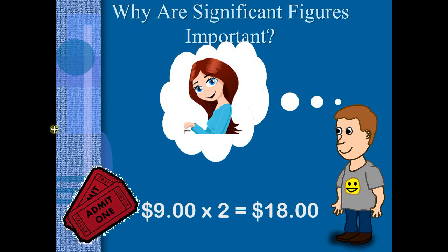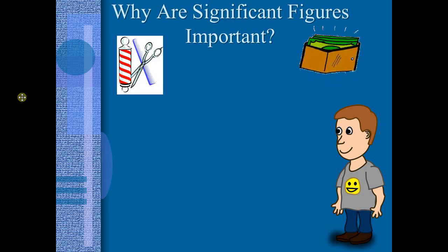and found that the tickets were going to be $9 each. So he knew he was going to need $18 to take Sarah to the movies. So he looked in his wallet, did a quick glance in there, saw there's a 20, there's a 10, there's a 5 or 2, and there's a whole bunch of 1s in there. So, yes, I'm in business. I've got about $50 in my wallet.